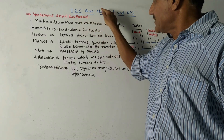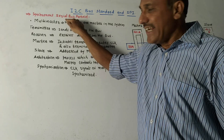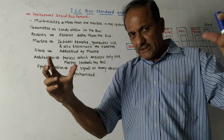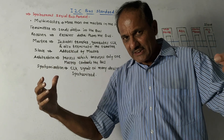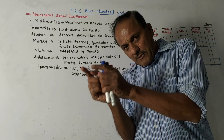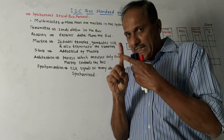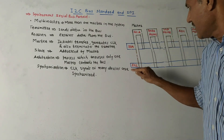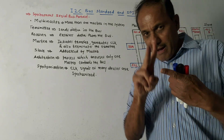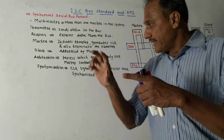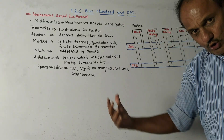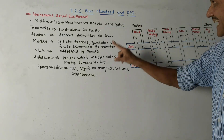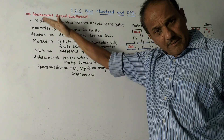What is this I2C bus standard? It is a Synchronous Serial Bus Protocol. It consists of a special type of bus which carries information. That particular bus makes use of two lines — one is SDA, which is a data line, and second is SCL, that is a clock line. By making use of these two lines, this bus is used to transfer information from one device to another.